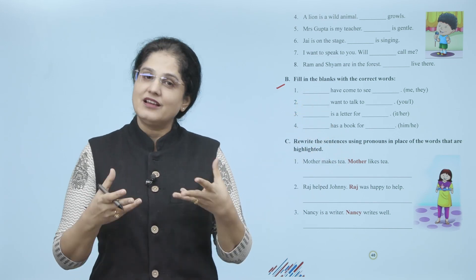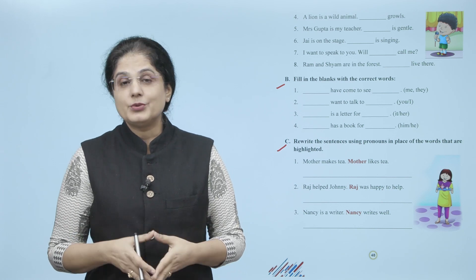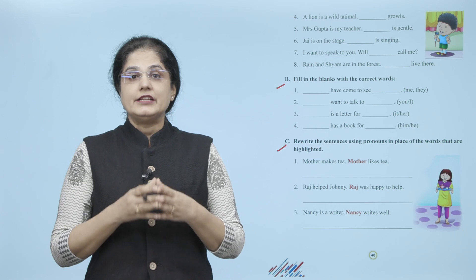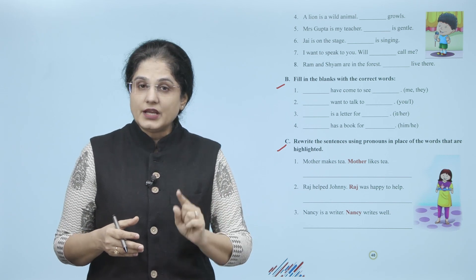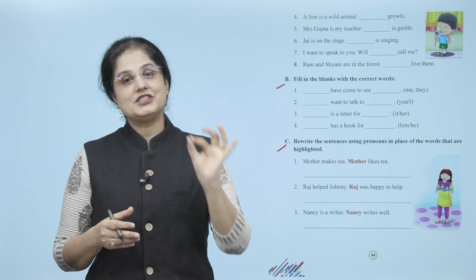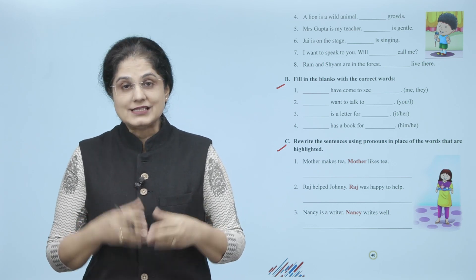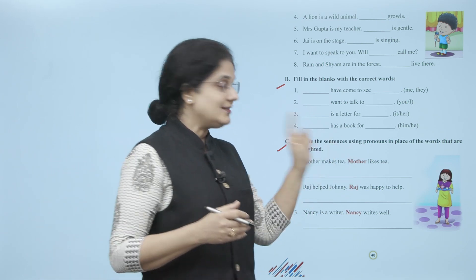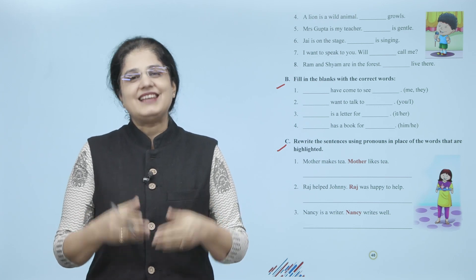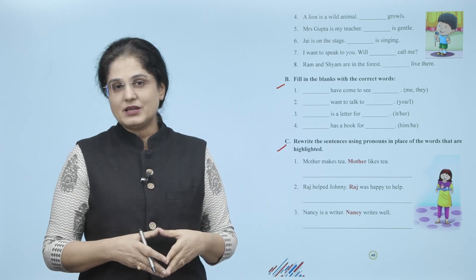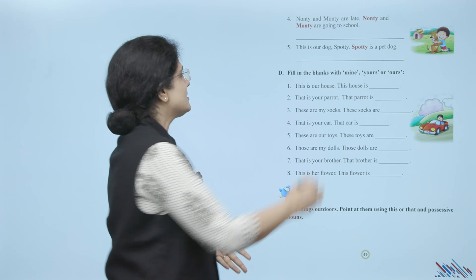Now let's look at the next question — rewrite the sentences using pronouns in place of the highlighted words. In sentences mein jis word ko highlight kiya gaya hai uski jagah pe aap appropriate pronoun likhkar sentences ko dubara likhein. For example: 'Mother makes tea. Mother likes tea.' Second sentence mein 'Mother' highlighted hai — toh rewrite karenge: 'Mother makes tea. She likes tea.' Isi tarah se aap baaki sentences ke highlighted words ki jagah pe correct pronoun likhein.